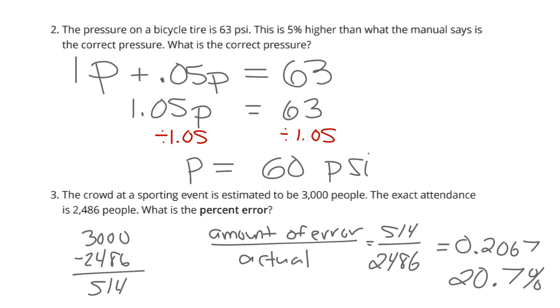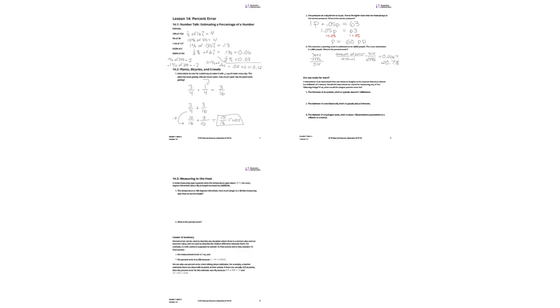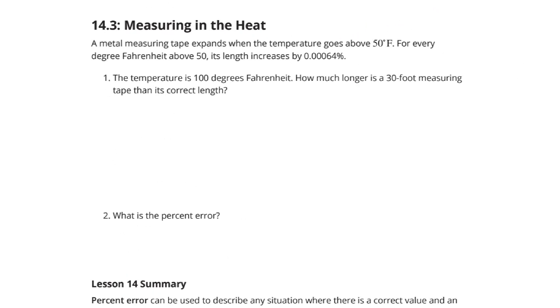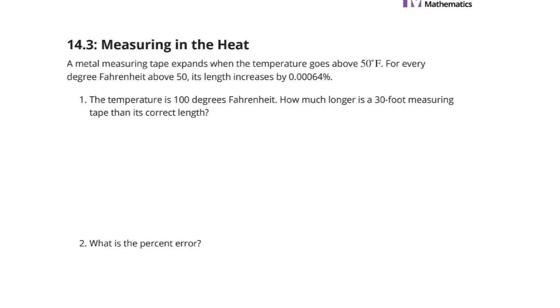So, as we continue on now to our next question, measuring in the heat. A metal measuring tape expands when the temperature goes above 50 degrees Fahrenheit. For every degree Fahrenheit above 50, its length increases by 0.00064%.